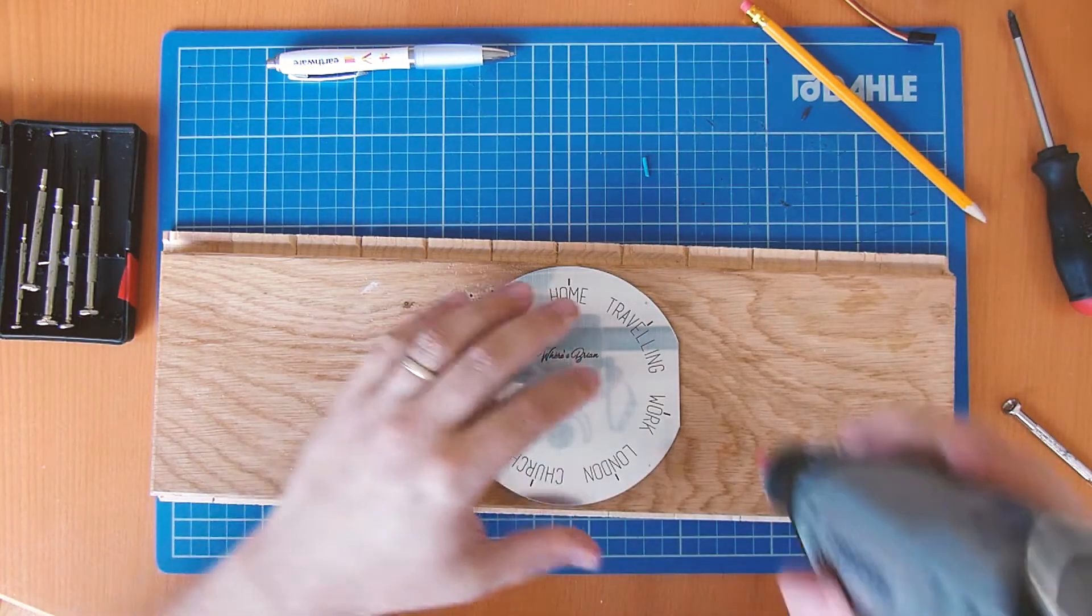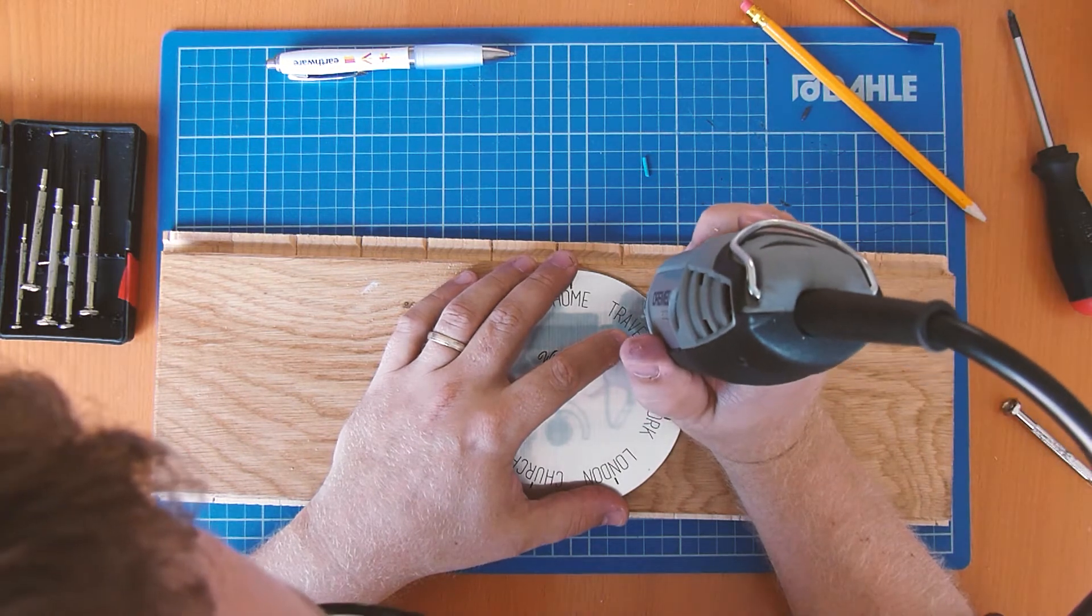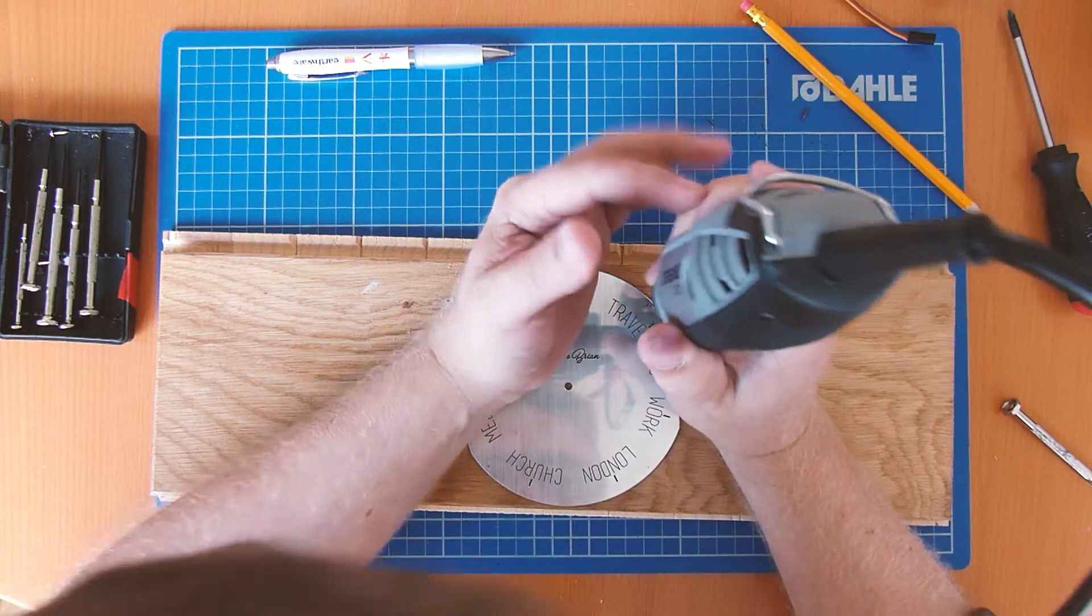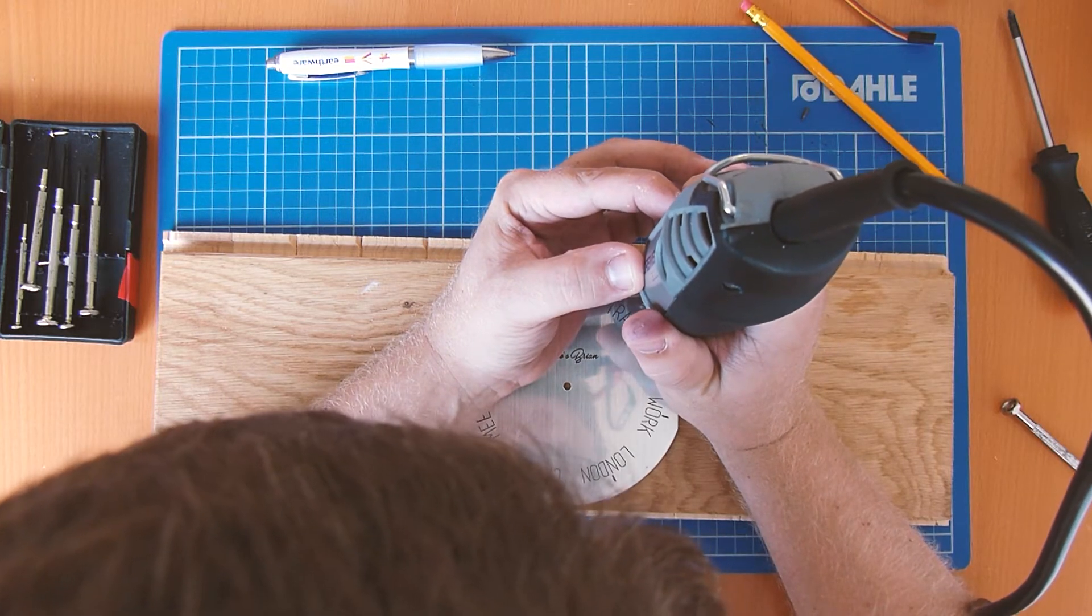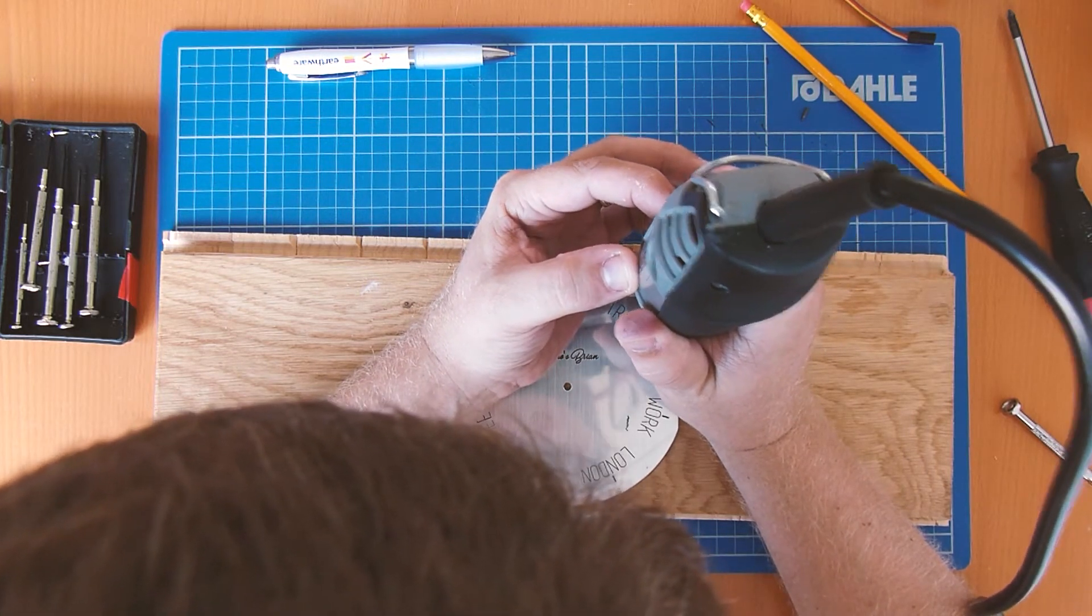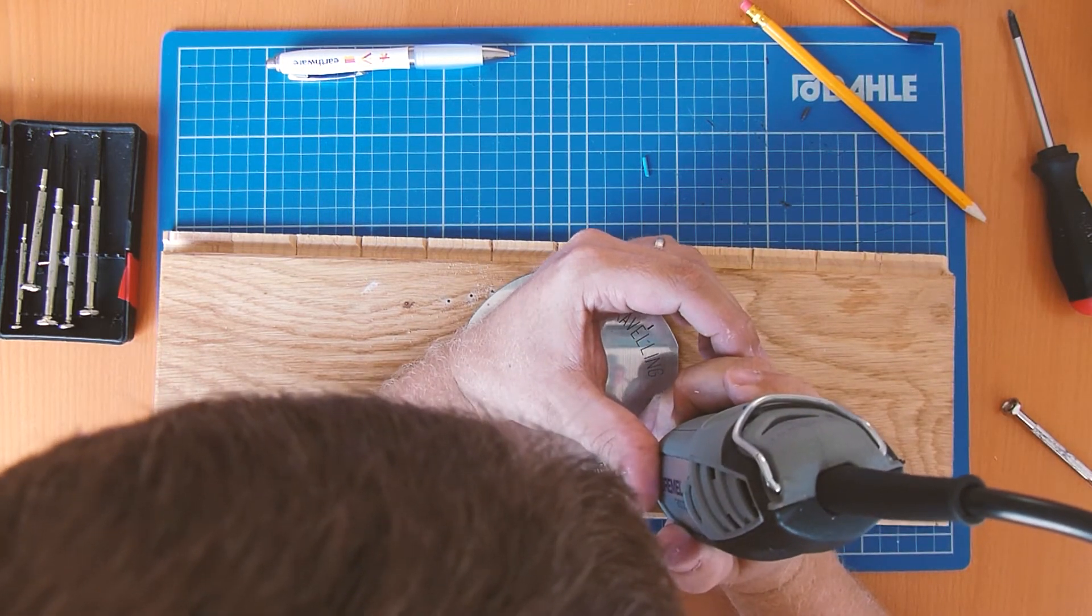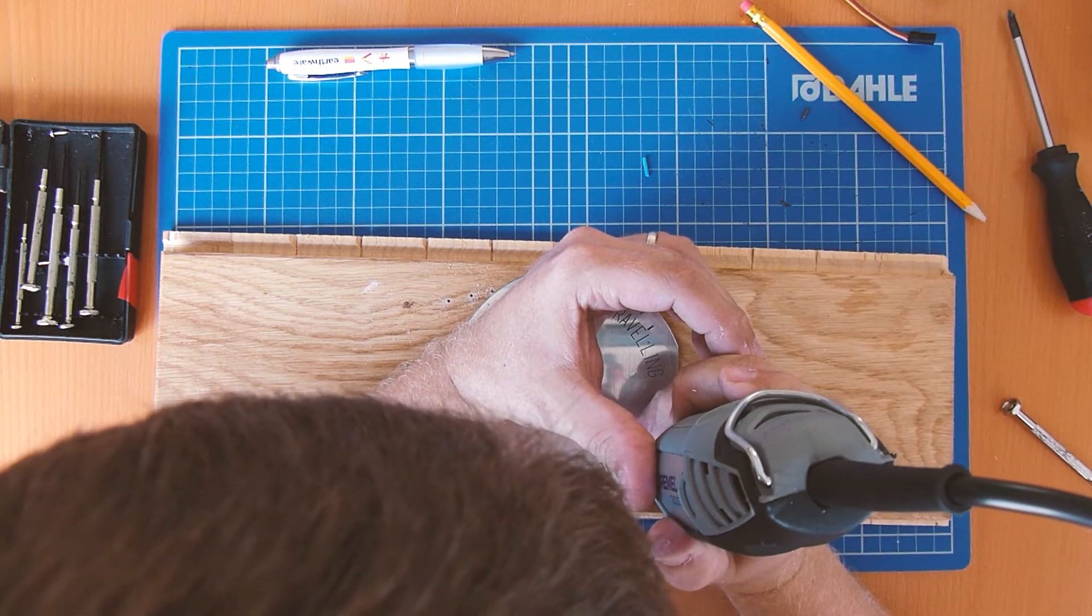And then we got the Dremel out and just drilled through the little marks that we'd made. It was quite tricky with the Dremel trying to use it as a drill, it just about worked, it didn't slip too much, and we drilled those four holes in the acrylic. Had to clean up the acrylic afterwards because it left some bits around the edge, but overall it was pretty good.